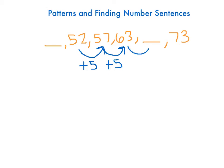So if I followed what was happening before and I add 5 again, that would be 68. So how are you going to check if that's right? Well, if it's right, if I add 5 to 68, I should get 73, which I do. Which means that the pattern is adding 5.